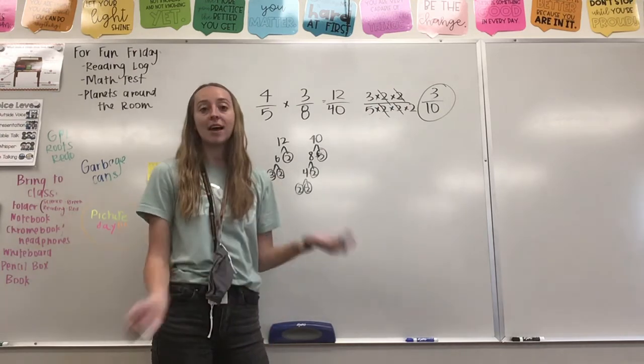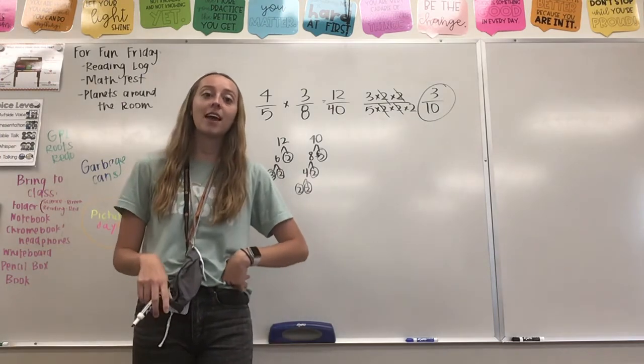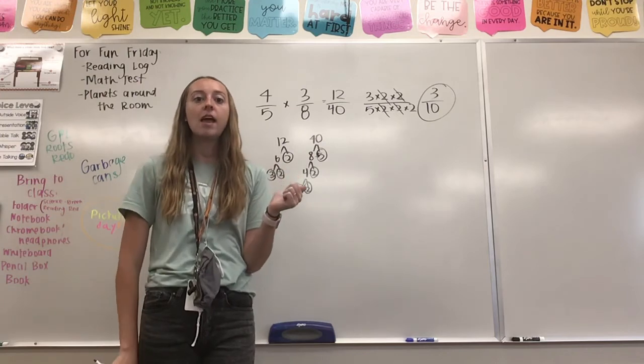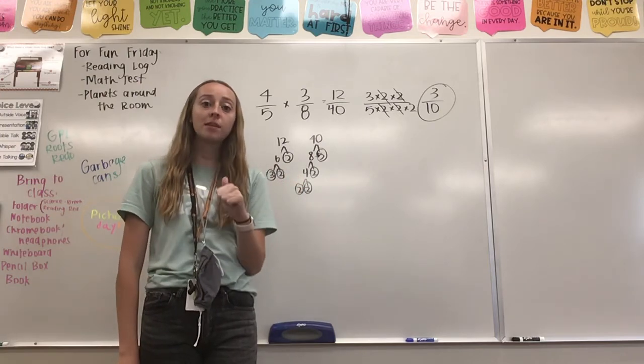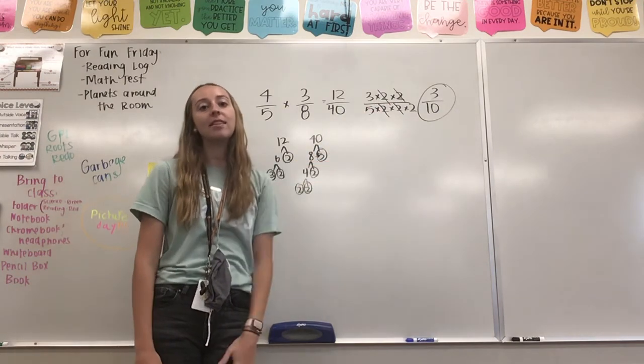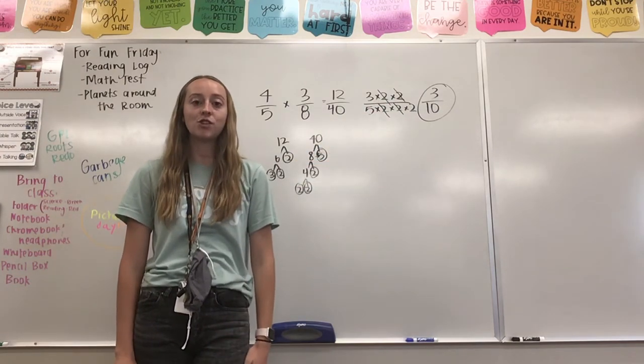So, that's how I multiply fractions and simplify at the end. Remember to multiply straight across first. And then, to simplify, you do your factor trees, set up your multiplying fraction, and then cross out and get your final answer.